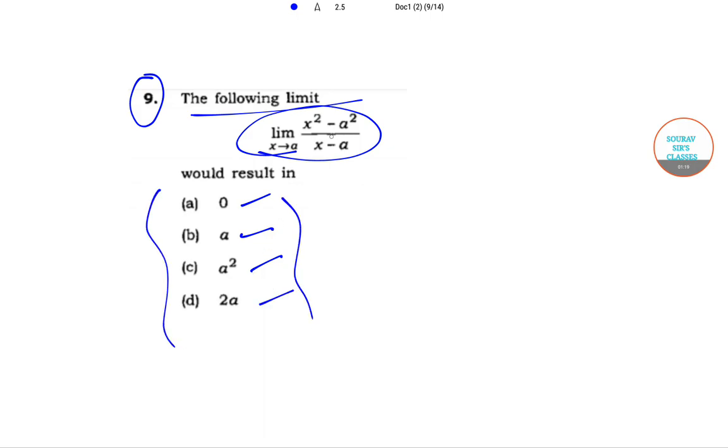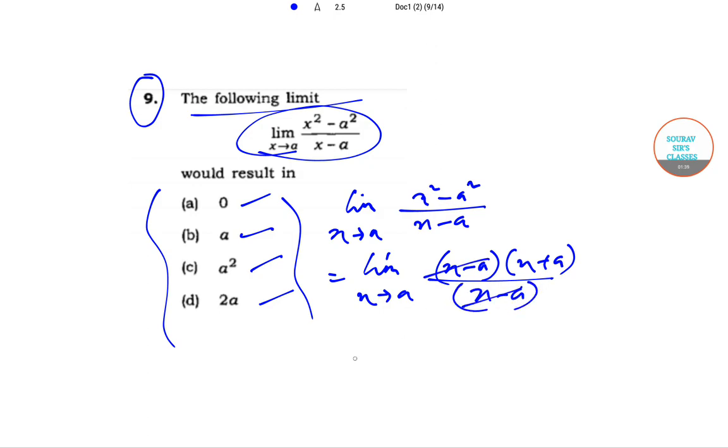As you can see, it is given as limit x square minus a square by x minus a as limit x tends to a. This can be written as limit x tends to a, x minus a into x plus a upon x minus a. x minus a and x minus a will cancel out and this gives us the limit x tends to a, x plus a. Now if we put x equal to a, then this gives us twice of a, which is option d.